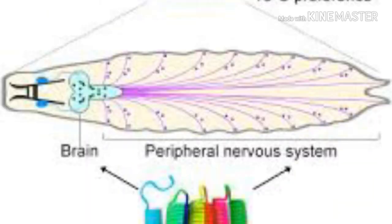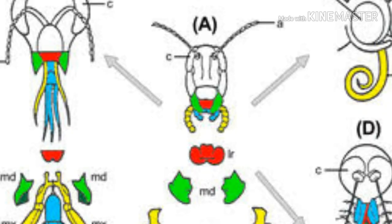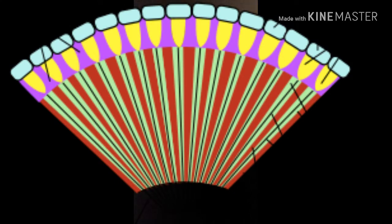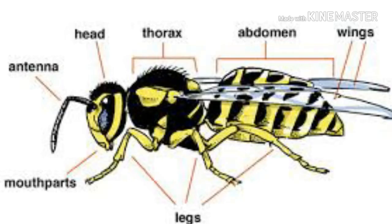Nervous system comprises a nerve ring and a double solid ventral nerve cord with paired ganglia. The head is distinct with a high degree of cephalization. Sensory organs like simple eyes or compound eyes, antennae, statocysts, and anal cerci are found.